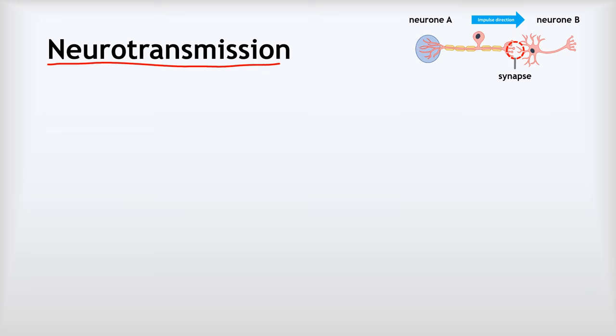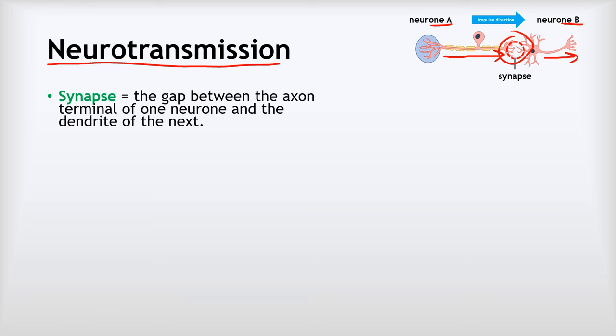So we've met our three different types of neuron: relay, motor, and sensory. Now we're going to look at neurotransmission, which is the solution to a problem you might not have realised was there. Imagine we have two nerve cells — neuron A, a sensory neuron, and neuron B, a relay neuron. An electrical impulse is travelling along neuron A and needs to go into neuron B. The trouble is, between the axon terminals of one and the dendrites of the next, there's a tiny little gap. The electrical impulse cannot travel across that gap, and yet we need an impulse from A to trigger an impulse in B. The solution to that problem is called neurotransmission, and that gap is called a synapse — the gap between the axon terminal of one neuron and the dendrite of the next.